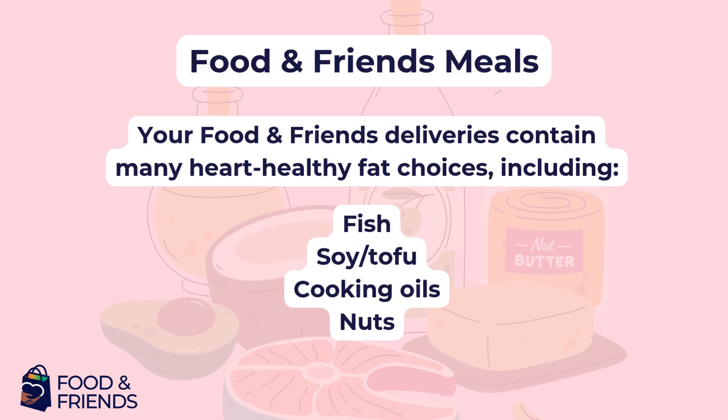You'll notice plenty of items in your Food and Friends deliveries that contain heart-healthy fats. For those receiving medically tailored meals, this includes dishes containing fish such as the salmon cakes or the Caribbean fish stew. You'll also find dishes made with soy products like tofu, and many dishes are cooked with heart-healthy oils. Another notable item is our trail mix, which contains heart-healthy fat from peanuts. If you receive our medically tailored groceries, you'll get heart-healthy choices such as canola oil, canned tuna, canned salmon, and lean meat like ground turkey and chicken breasts.